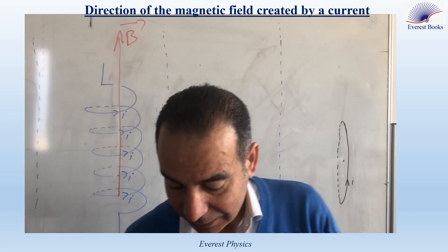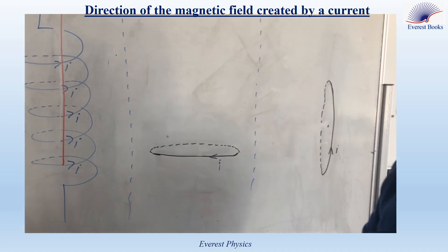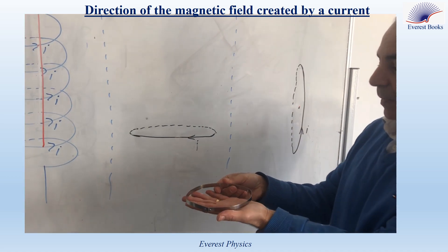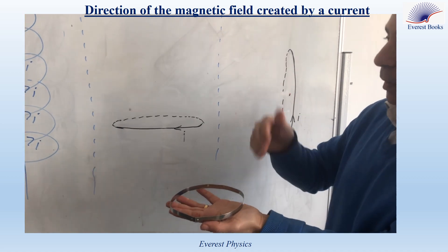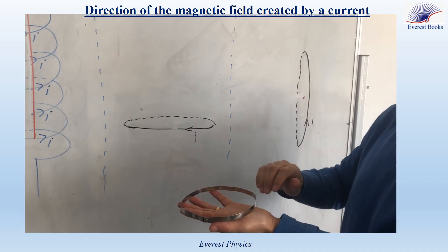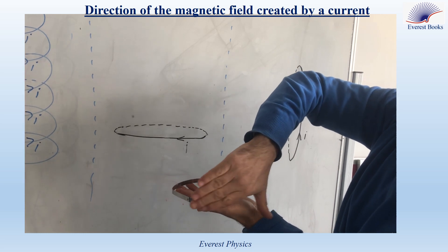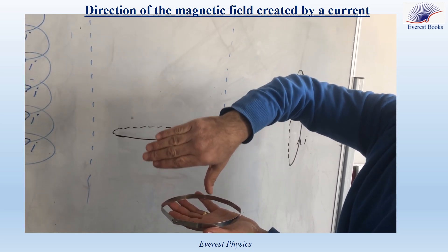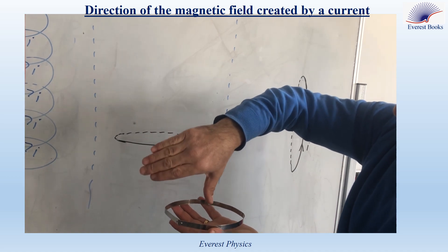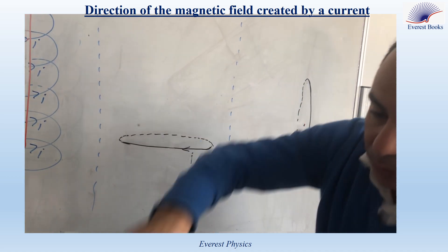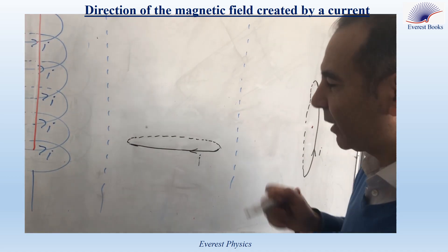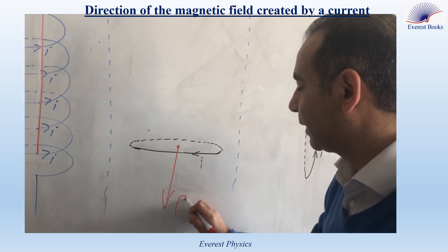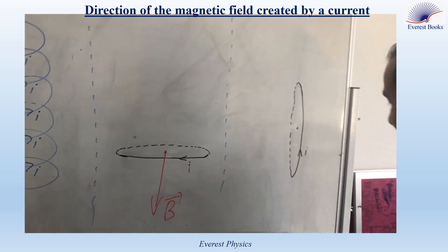Now let's study the magnetic field created by a current at the center of a loop. This loop is placed in the horizontal plane. At the center of the loop, as with the solenoid, we carry the fingers of the right hand in the sense of the current. The thumb points to the direction of the magnetic field — in this case, the thumb is directed vertically downward. So the magnetic field at the center of the loop is directed vertically downward.